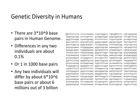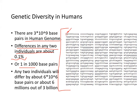There are 3 billion base pairs in the human genome, and the difference between any two individuals is about 0.1% — that's 1 in 1,000 pairs, or about 6 million base pairs out of 3 billion.